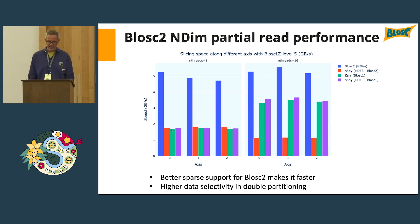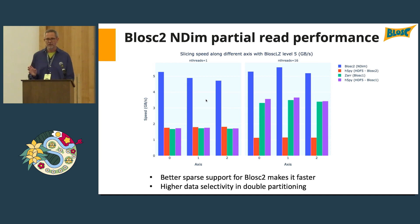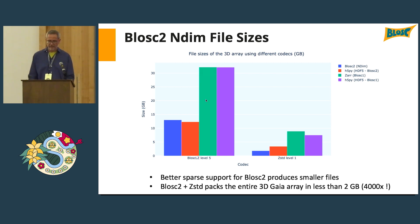On the benchmark charts, the left shows single-thread performance and the right shows 16-thread performance. Even with a single thread, this codec performs well because CPU is not the bottleneck — memory bandwidth is. For the 3D Gaia dataset file sizes, this 7-terabyte dataset can be reduced to less than 15 gigabytes using the BLOSC-LZ codec. In contrast, Zarr or h5py with BLOSC1 compress much less because BLOSC1 lacks specific sparse data support.